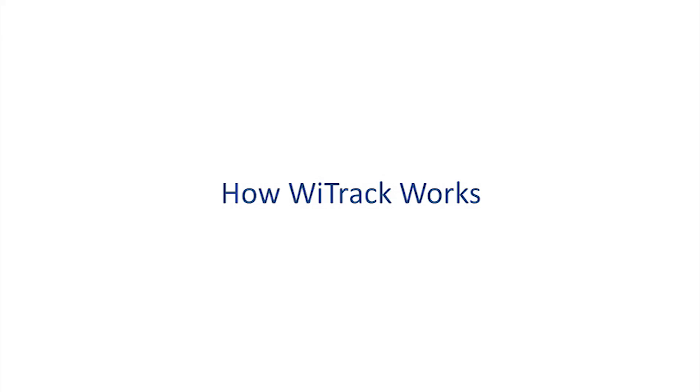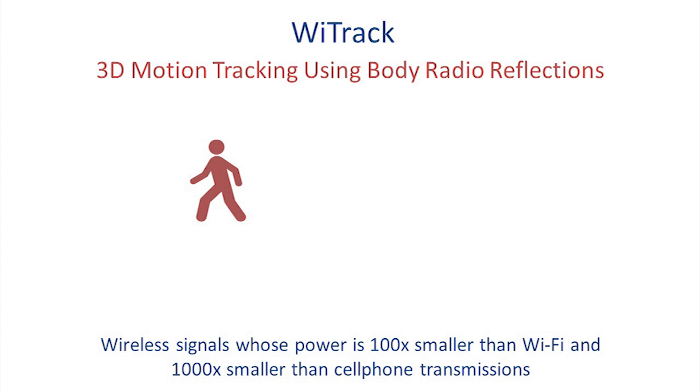So let us see how YTrack works. YTrack performs 3D motion tracking using body radio reflections. It transmits wireless signals whose power is 100 times less than WiFi and 1000 times smaller than cell phone transmissions. These signals will reflect off the person and come back to its received antennas after some delay.